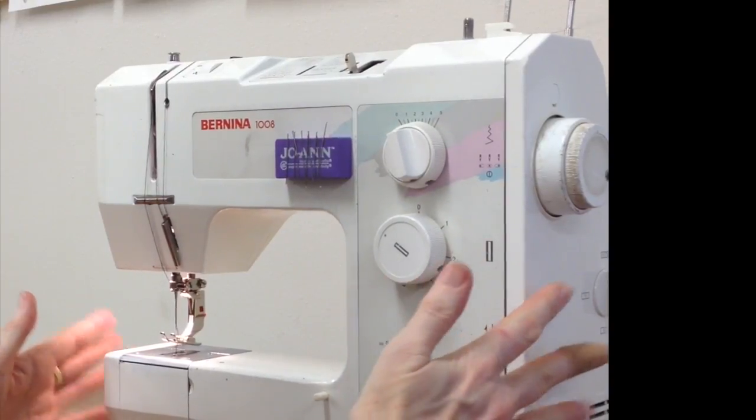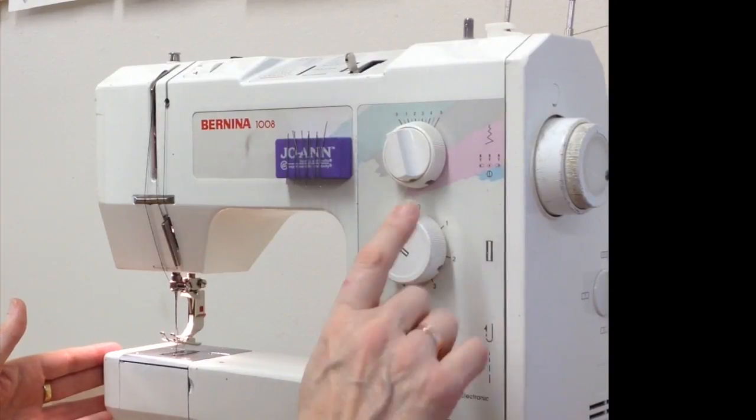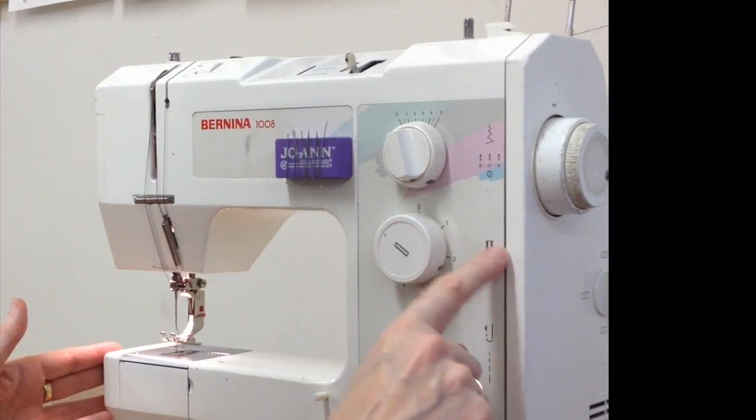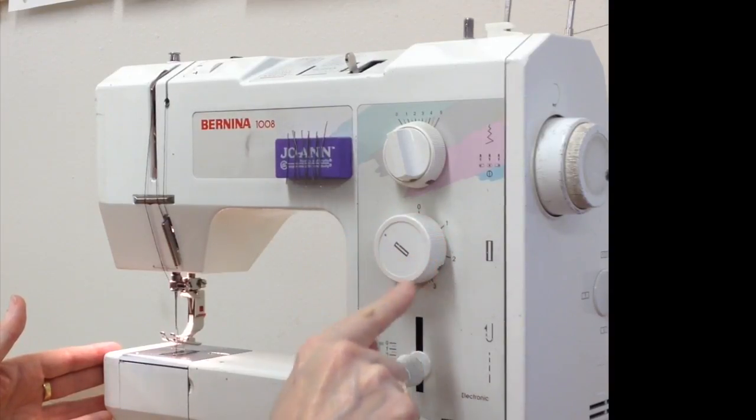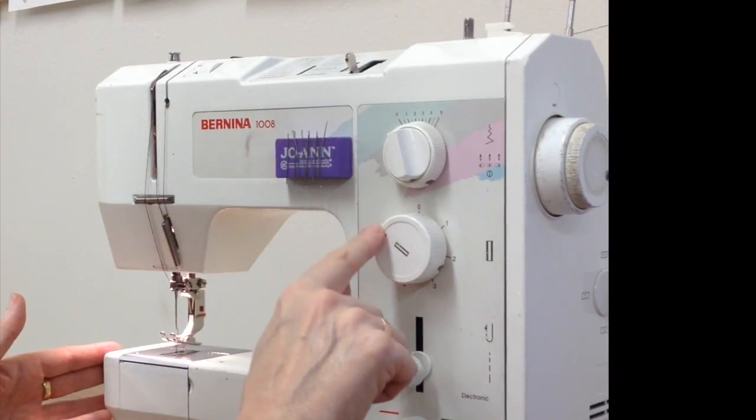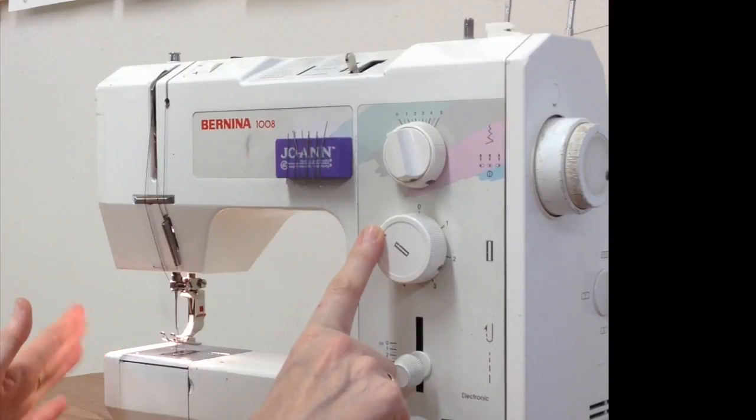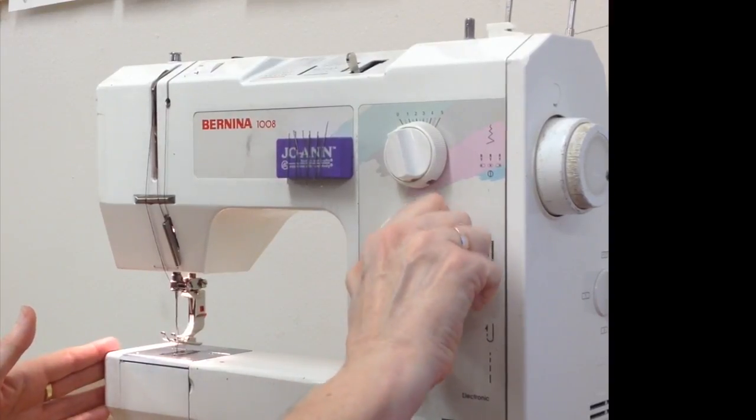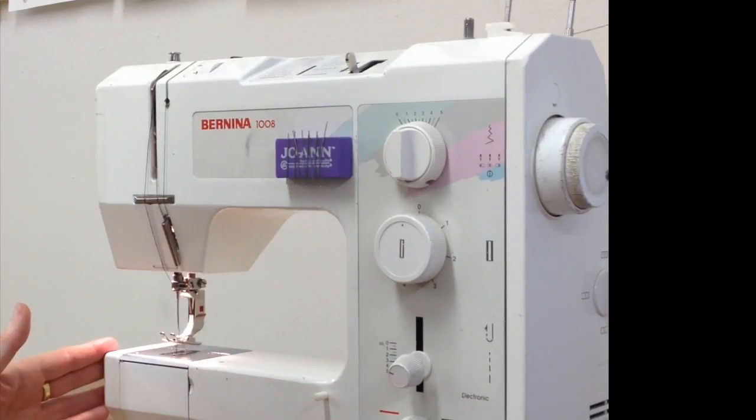Another thing to check when you're sitting at the machine and it won't go when you put your foot on the gas pedal is check this buttonhole dial. If someone has done a buttonhole, gone through all the steps but forgotten to reset it to zero, the machine won't operate the way you think it should. So just check that, turn it to zero and then it resets all the other dials to a neutral.